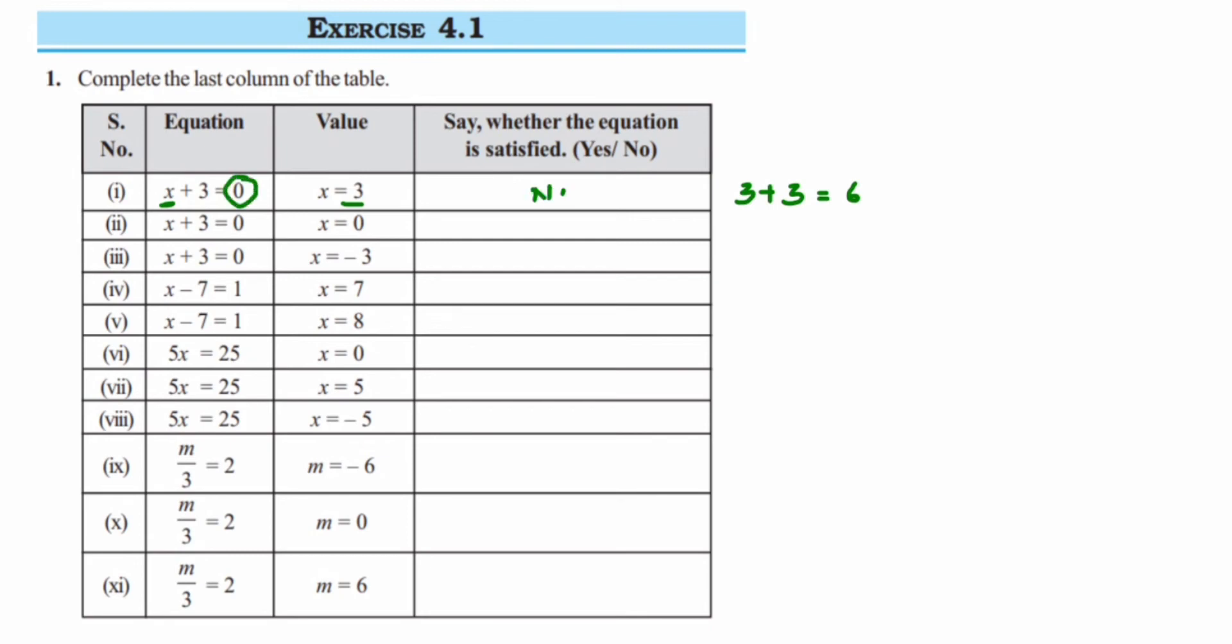The next one, x is equal to 0. So when I put x is equal to 0 here, it will be 0 plus 3, which is nothing but 3. But here on RHS side they have given us 0, so even this is no. This is not an equation.